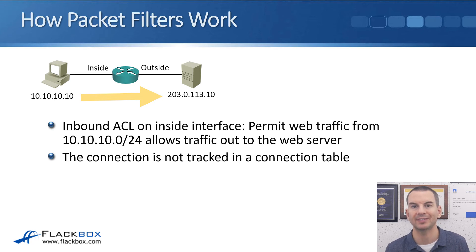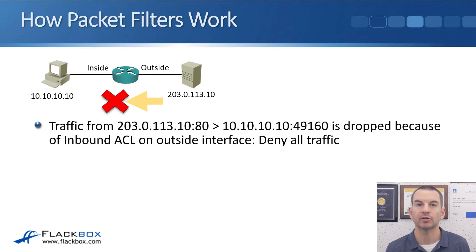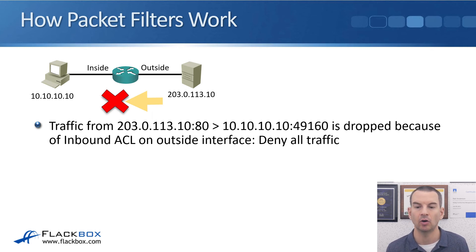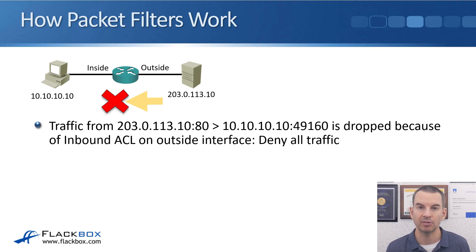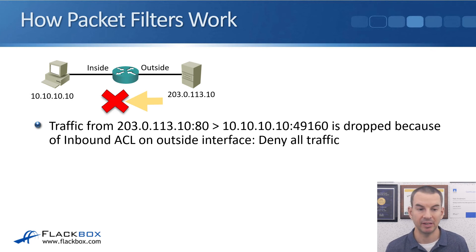However, the connection is not tracked in a connection table as it would be with a stateful firewall. When the web server sends return traffic from 203.0.113.10 port 80 to 10.10.10.10 port 49160, it is dropped by the deny-all inbound ACL on the outside interface. A stateful firewall tracks connections and allows valid return traffic; an ACL does not, so you need explicit rules to allow traffic in both directions.